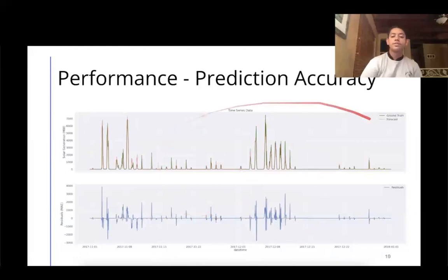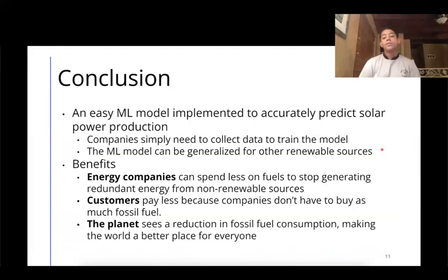Right here is just a graph that shows roughly how accurate our model was over time. From here, we conclude that the machine learning model we've developed can be easily implemented to accurately predict solar power production. Companies only need to collect the data to train the model and the machine learning model can be generalized for other renewable resources.